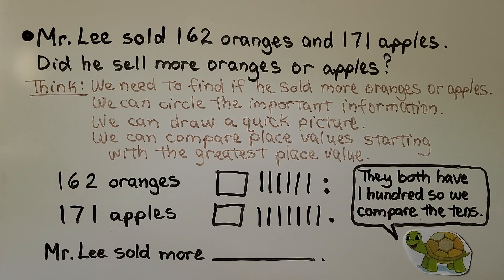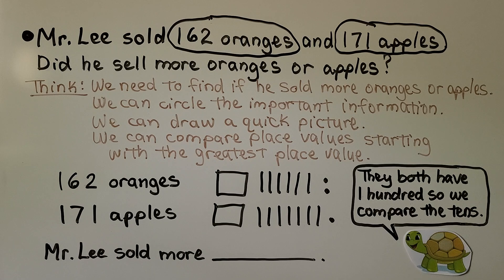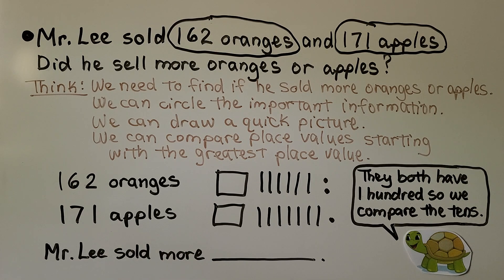Mr. Lee sold 162 oranges and 171 apples. Did he sell more oranges or apples? We need to find if he sold more oranges or apples. We can circle the important information: 162 oranges and 171 apples. We can draw a quick picture and compare place values, starting with the greatest place value.